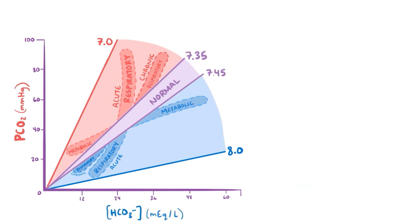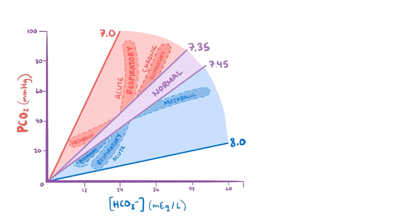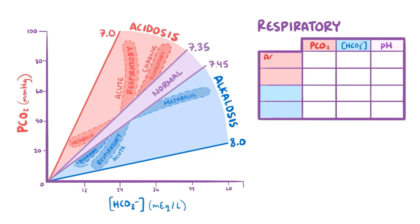As a quick recap: an acid-base map shows the relationship between pH, bicarbonate concentration, and pCO2 in respiratory and metabolic acidosis or alkalosis, and how these values are adjusted during renal or respiratory compensation. Respiratory acidosis in the acute phase is characterized by high pCO2 without any change in bicarbonate concentration, resulting in a very low pH. In the chronic phase, due to renal compensation, bicarbonate concentration rises too, so pH is relatively higher but still lower than normal.